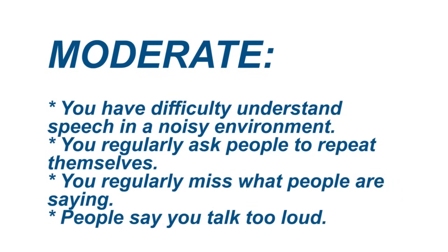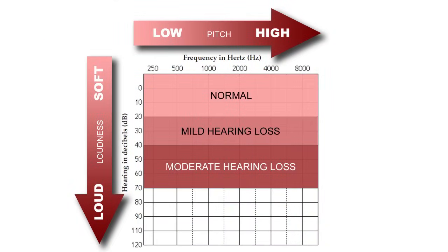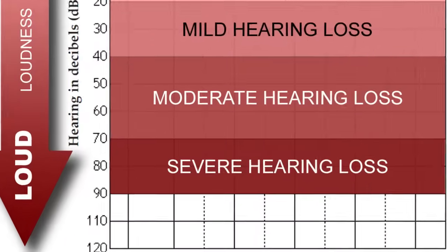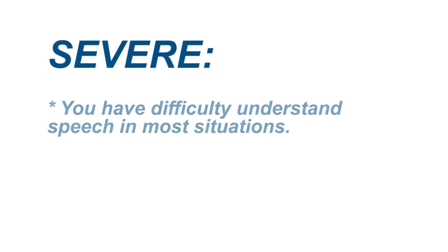If you have severe hearing loss, the X or circle will fall in the 70 to 90 decibel range. This means you are having significant difficulty hearing during most types of communication and you may start avoiding noisy places where you know you will miss much of the conversation.